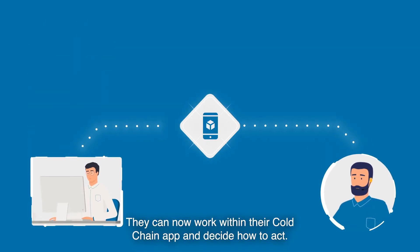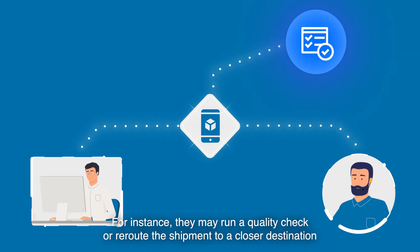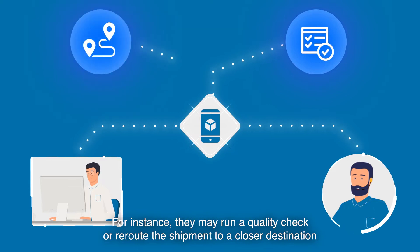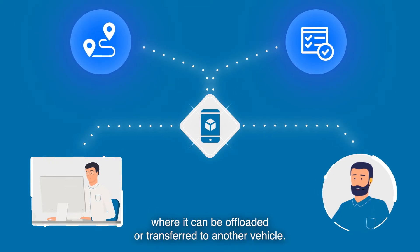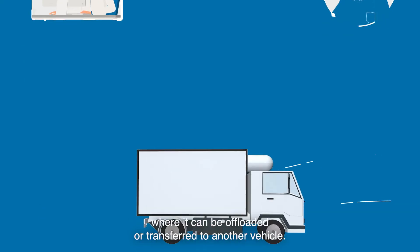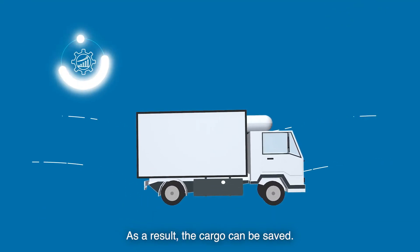They can now work within their cold chain app and decide how to act. For instance, they may run a quality check or reroute the shipment to a closer destination where it can be offloaded, or transferred to another vehicle. As a result, the cargo can be saved.